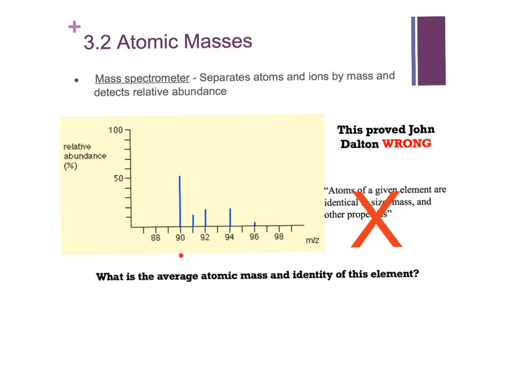And we can see that this element has about 50% of the hits are isotope 90. We got a couple at 91, 92, 94, and then way over here at 96. So all the carbon atoms, for instance, do not weigh 12. Some of them weigh different amounts. So this one has five different isotopes.